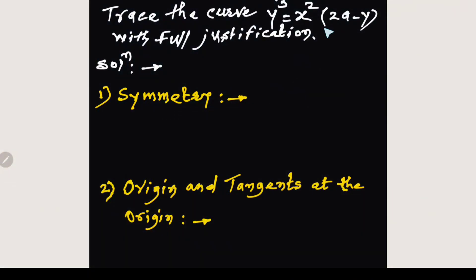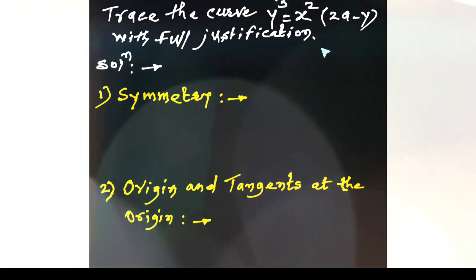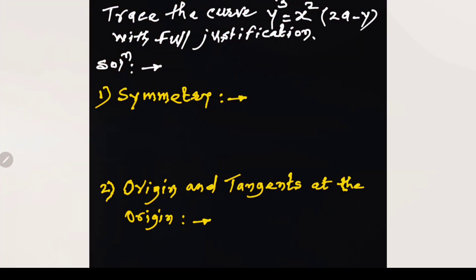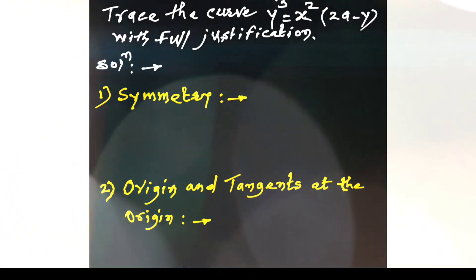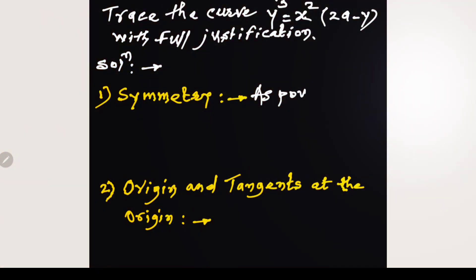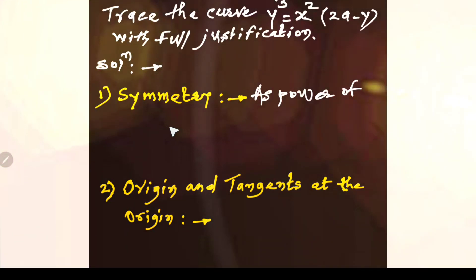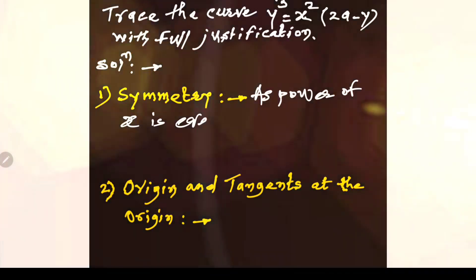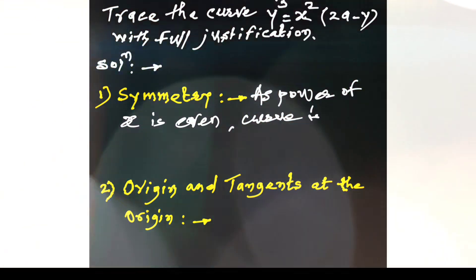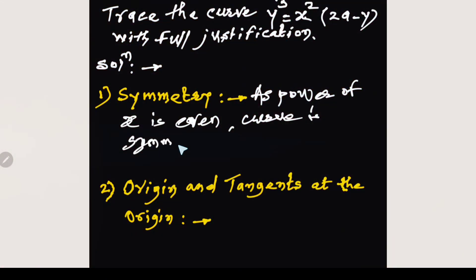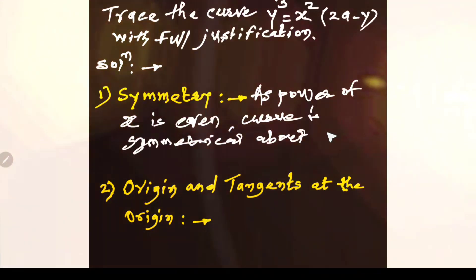As it is a Cartesian type of curve, to trace it we have to follow 5 steps. The first point is symmetry. To decide the symmetry of the curve, we have to check the degree of each and every term. Here the degree of x is even, and therefore the curve is symmetrical about the y-axis.